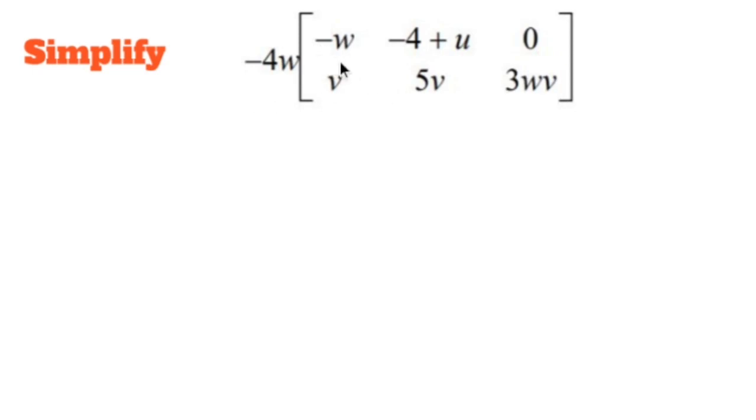This matrix is a two-row, three-column matrix, so it's a 2 by 3. Not that it matters, but when you multiply something by a 2 by 3, you get a 2 by 3.